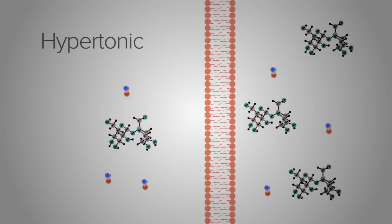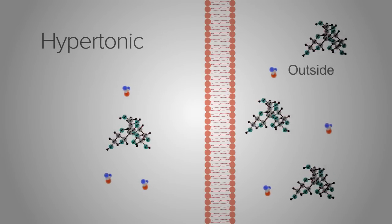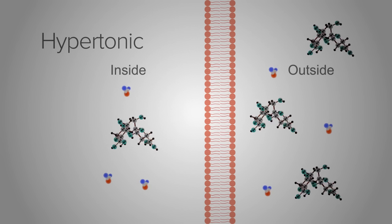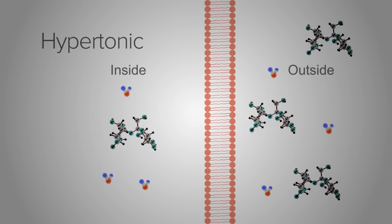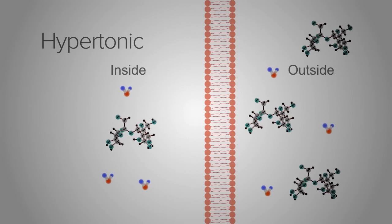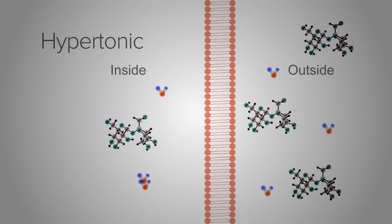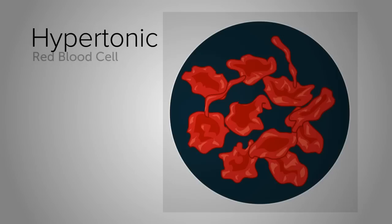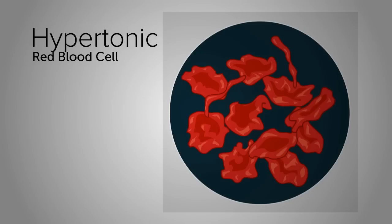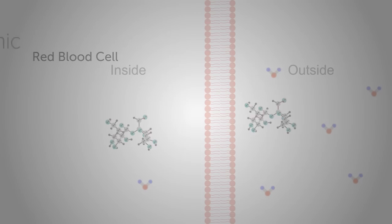In a hypertonic solution, there is a higher concentration of solutes outside of a cell than inside. Because there is a higher concentration of sugar outside the cell, water molecules move from the side of the membrane with lower concentration of sugar to the side with higher concentration. In the case of a red blood cell, water molecules leaving the cell causes it to shrivel up like a raisin.